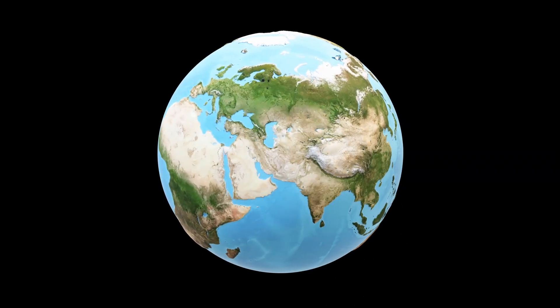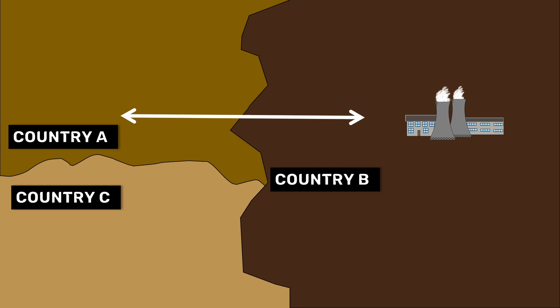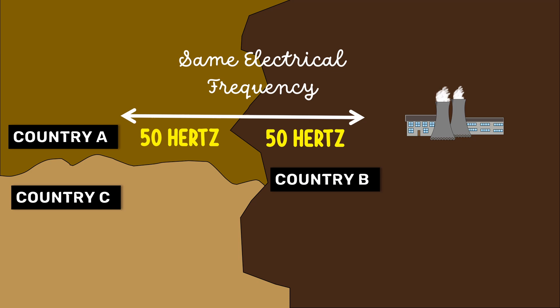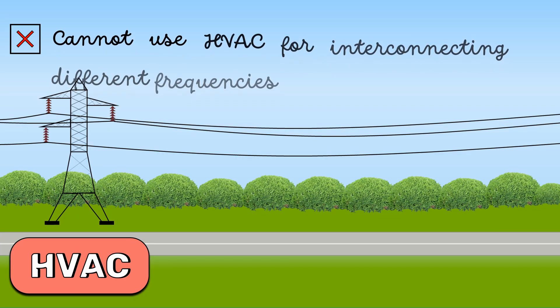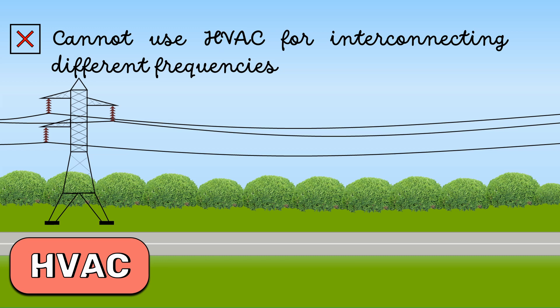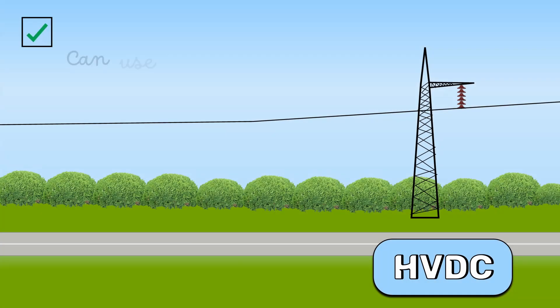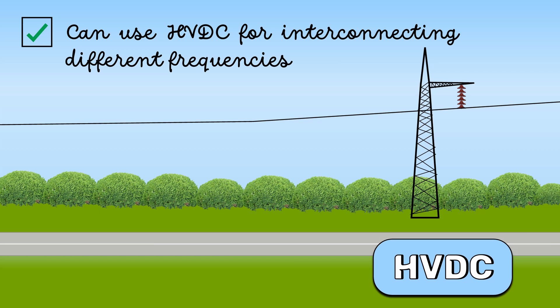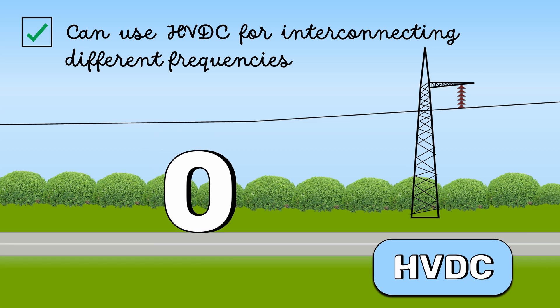Countries that generate surplus electricity trade and share electricity with neighboring countries. The main thing to consider here is that two countries that share electricity should have the same electrical frequencies. But what if their frequencies don't match? We cannot use high voltage AC transmission to interconnect power grids with different frequencies. However, HVDC is very useful in interconnecting power grids with different frequencies, because DC frequency is zero, so we don't have to worry about frequency matching.